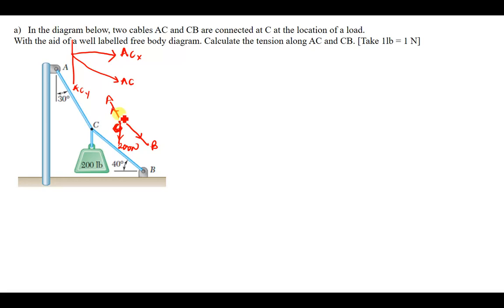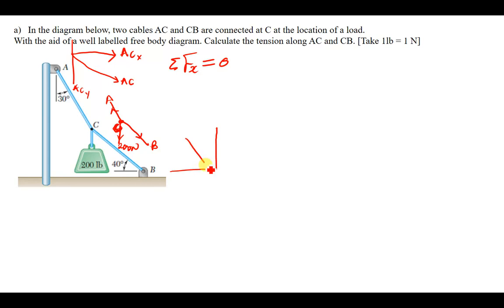Let us find the forces in the x and the forces in the y at this joint — the summation of forces in x and summation of forces in y. Using Newton's second law, if the system is in equilibrium, the summation of forces in x equals zero. At joint B we also identify the components: BC in x and BC in y.